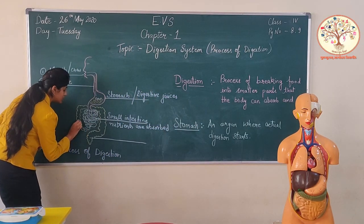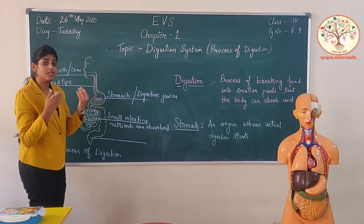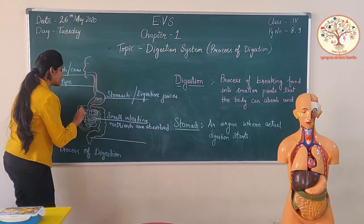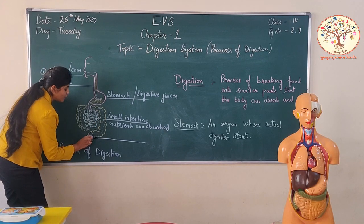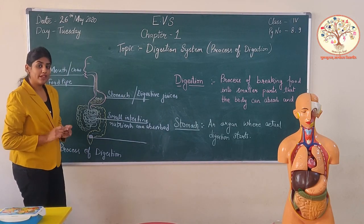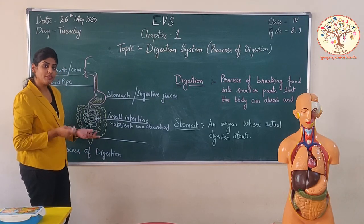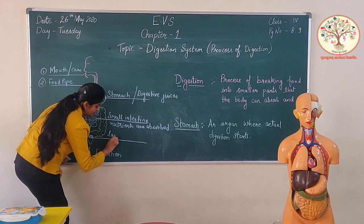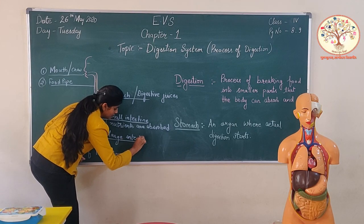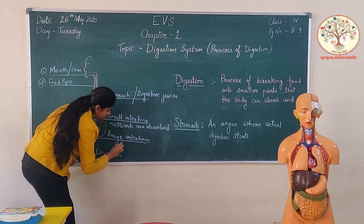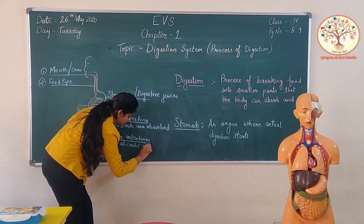When the food arrives here it is in liquid form, because it has already been mixed with so many juices and became a smooth paste. So extra water is absorbed by the large intestine, and the food that is totally waste for our body is passed out of the body. So the large intestine helps to absorb extra water from the waste food.